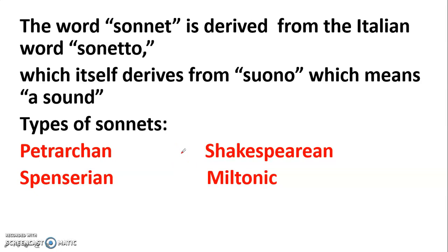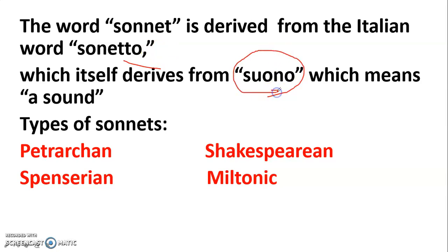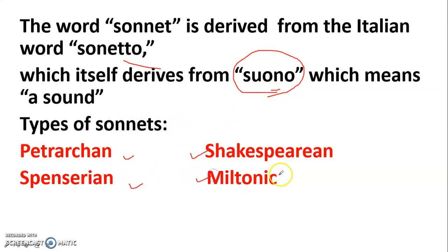Before starting, let us revise what a sonnet is. The word 'sonnet' is derived from the Italian word 'soneto,' which itself derives from 'suono,' meaning 'a sound.' There are four primary types of sonnets: Petrarchan, Spencerian, Shakespearean, and Miltonic.